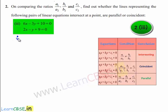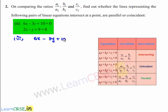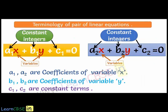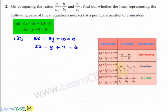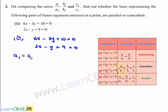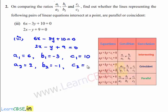Now coming to the third bit. The given set of linear equations are 6x minus 3y plus 10 is equal to 0 and 2x minus y plus 9 is equal to 0. Comparing with the standard equations, we get a1 is equal to 6, b1 is equal to minus 3, c1 is equal to 10, a2 is equal to 2, b2 is equal to minus 1, and c2 is equal to 9.